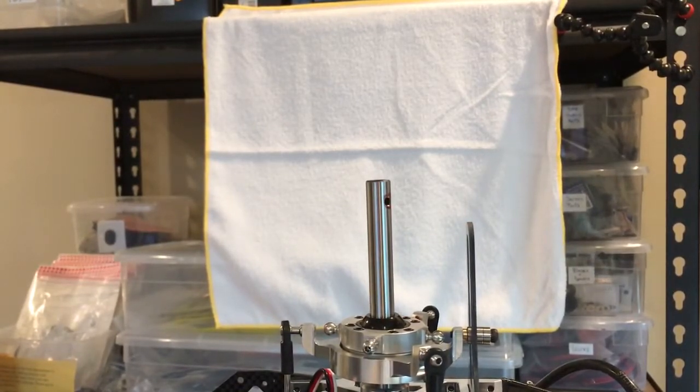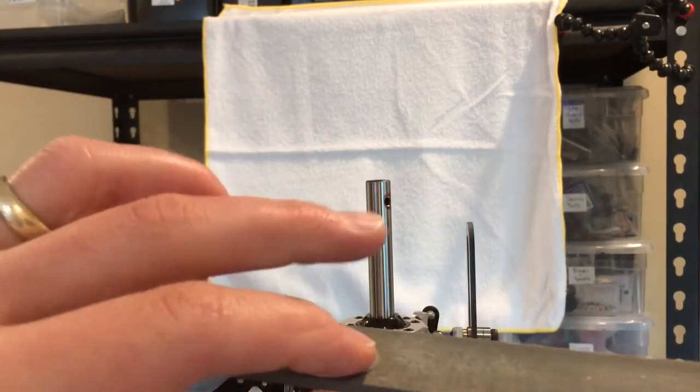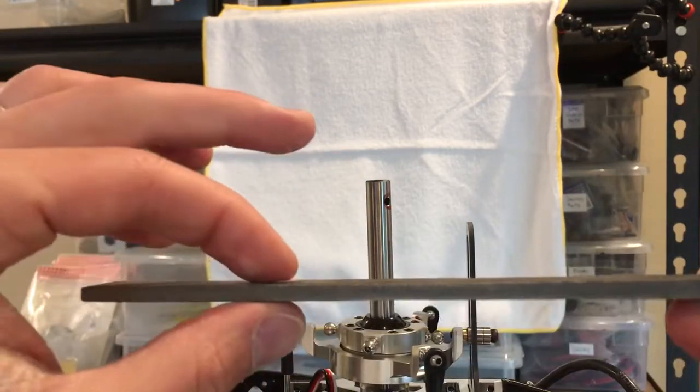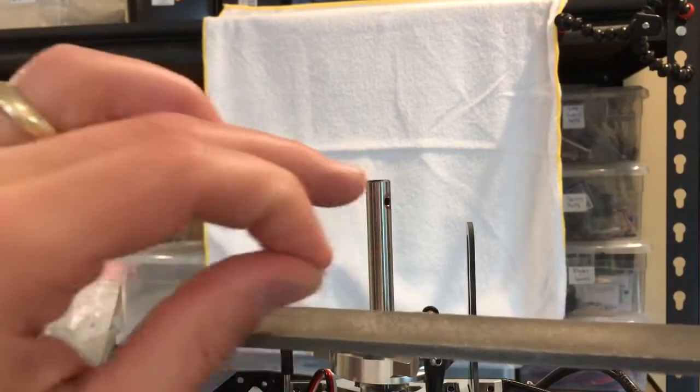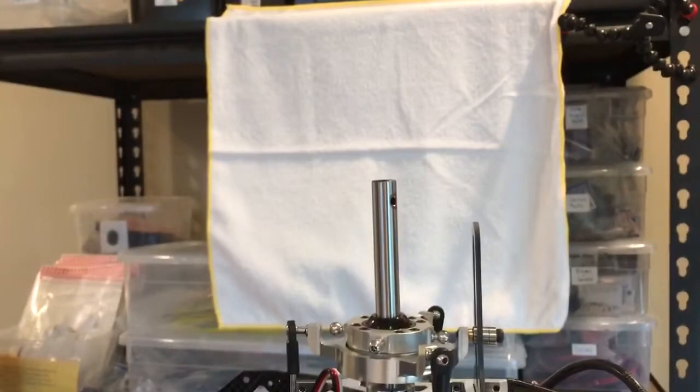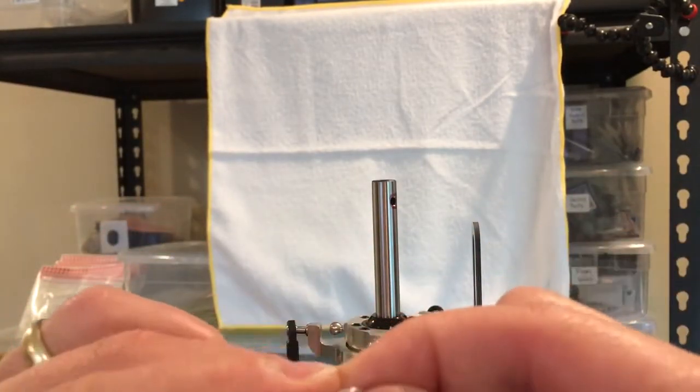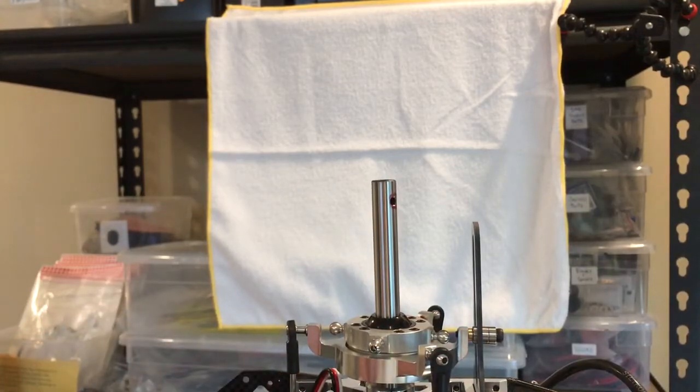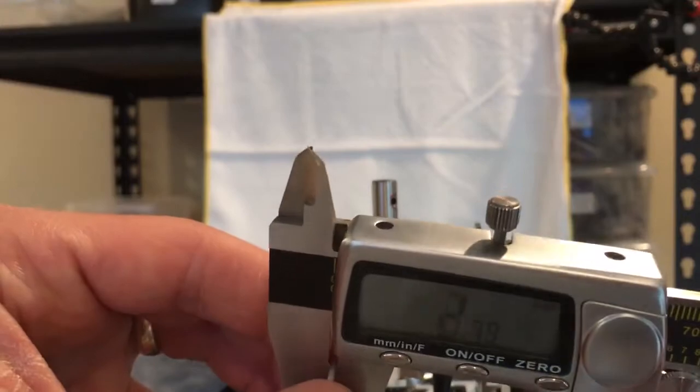I reduced the thickness of one of the shims using a file. Okay, so I'm using two shims and I just reduced the thickness of one shim so that when I put these two shims together, the thickness came out to about 0.98.